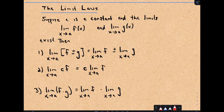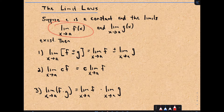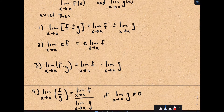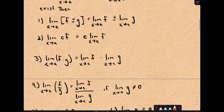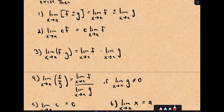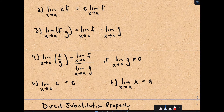So the limit laws — we're talking about evaluating limits and what's legal and what's not legal. So c is a constant, and assuming the limit as x approaches a of f(x) and the limit as x approaches a of g(x) both exist. If you have addition or subtraction between functions, just evaluate the limits individually and then combine them. If you have a constant, you can just pull the constant out front. If you have a product, you can take the limit of each function respectively and then multiply.